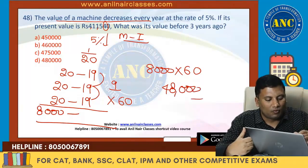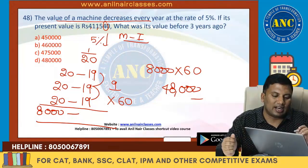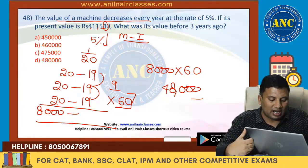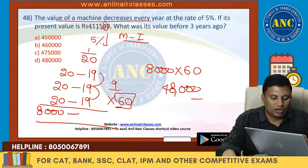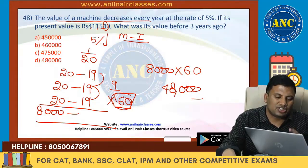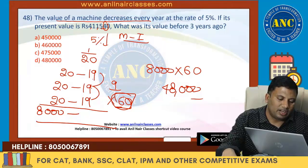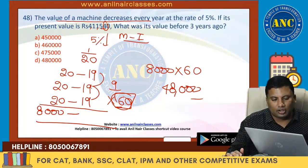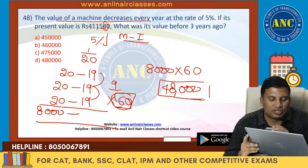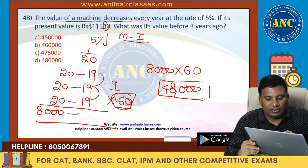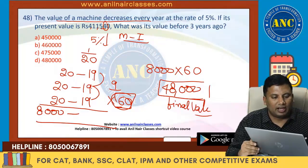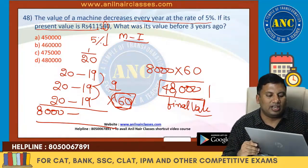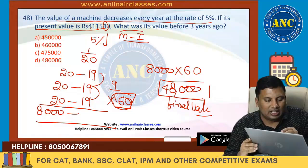The answer is 48,000. This is the final value. With a depreciation of 5% every year, the present value is 4,11,540. This is Method 1. If you are good in ratios, use this method.